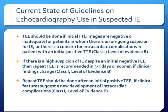Regarding additional guideline recommendations: TEE should be done if initial transthoracic images are negative or inadequate in patients with ongoing suspicion for IE, or if there is concern for intracardiac complications in patients with an initial positive TTE. If there is high suspicion of IE despite an initial negative TEE, a repeat TEE is recommended in three to five days or sooner if clinical findings change. Repeat TEE should also be done after an initial positive TEE if new intracardiac complications are suspected. All of these are Class I, Level of Evidence B recommendations.